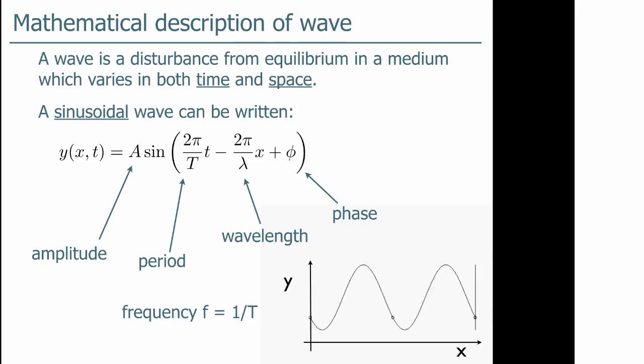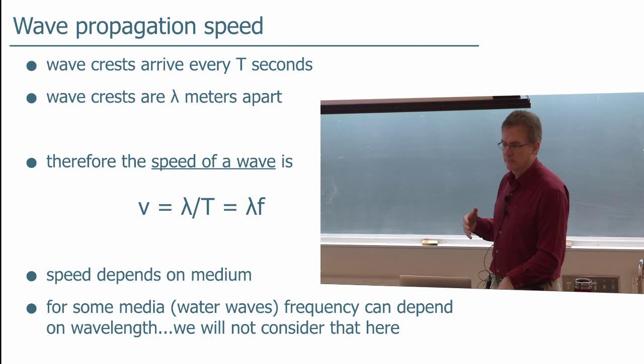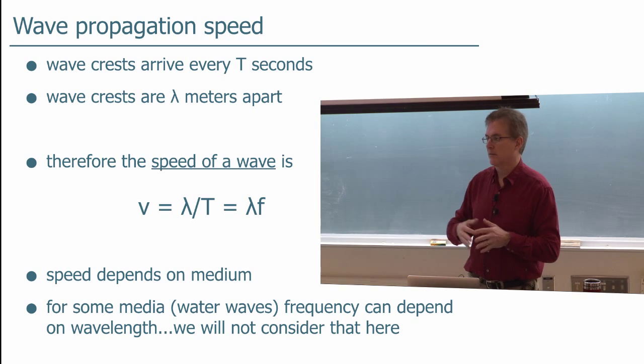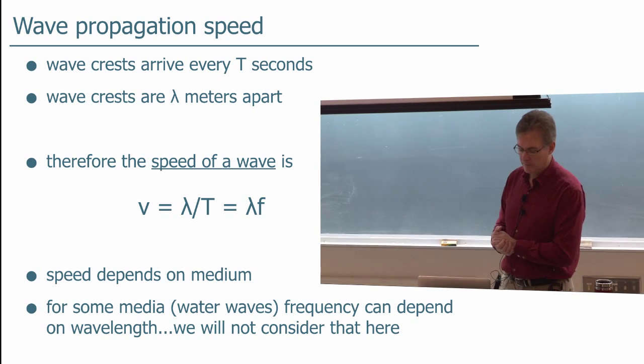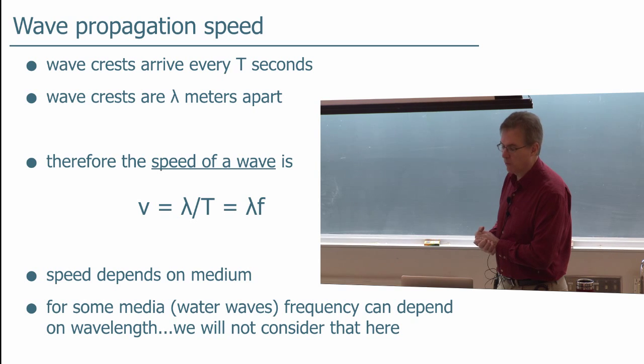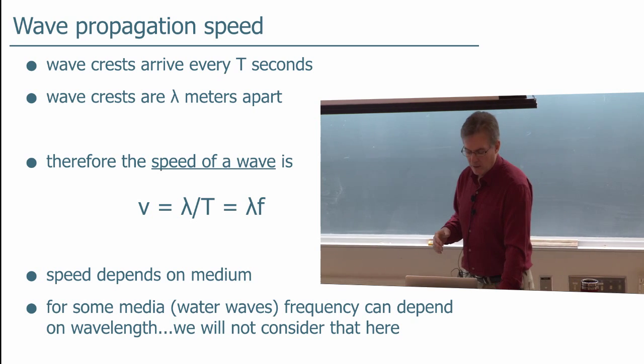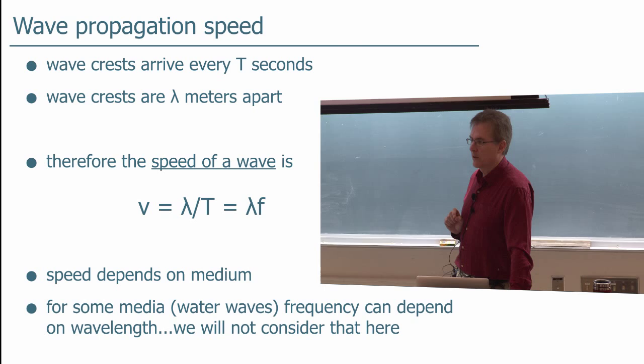As you can see, as that wave travels, the crests arrive every T seconds. And T can be anything. The wave crests are lambda meters apart. So therefore the speed of the wave V is lambda over T, lambda over the period, which we define as lambda times the frequency of the wave.